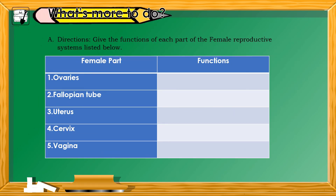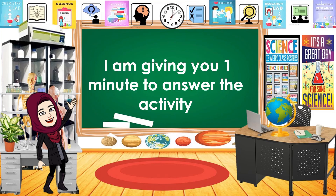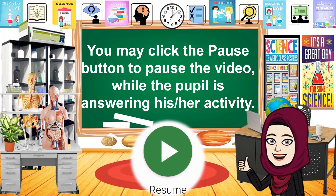Now let's answer a short activity from what's more to do. Directions: Give the functions of each part of the female reproductive system listed below. Number 1: Ovaries. Number 2: Fallopian tube. Number 3: Uterus. Number 4: Cervix. Number 5: Vagina. I'm giving you 1 minute to answer the activity.